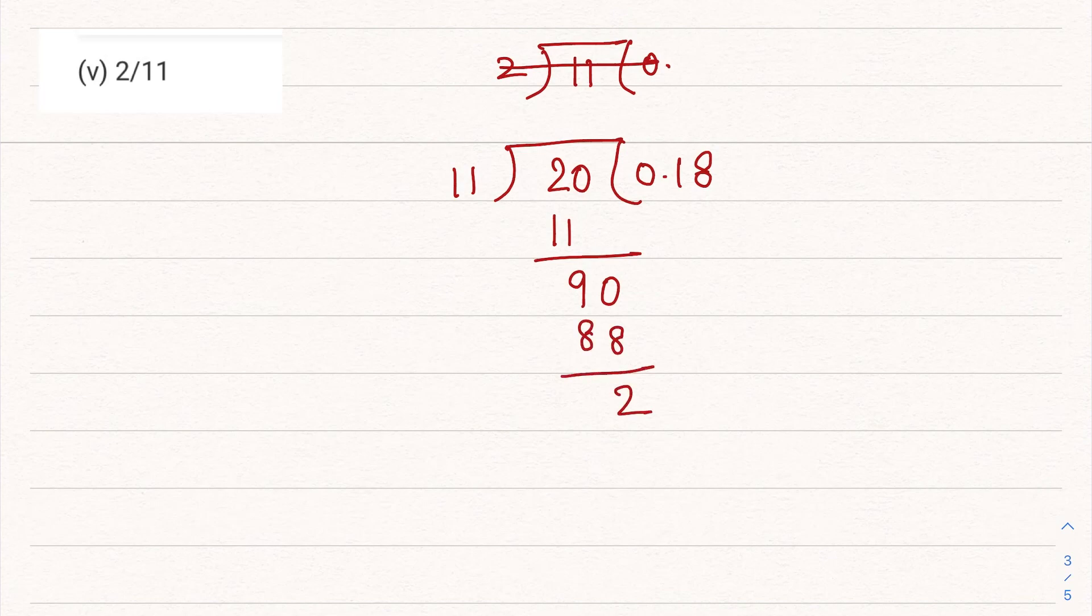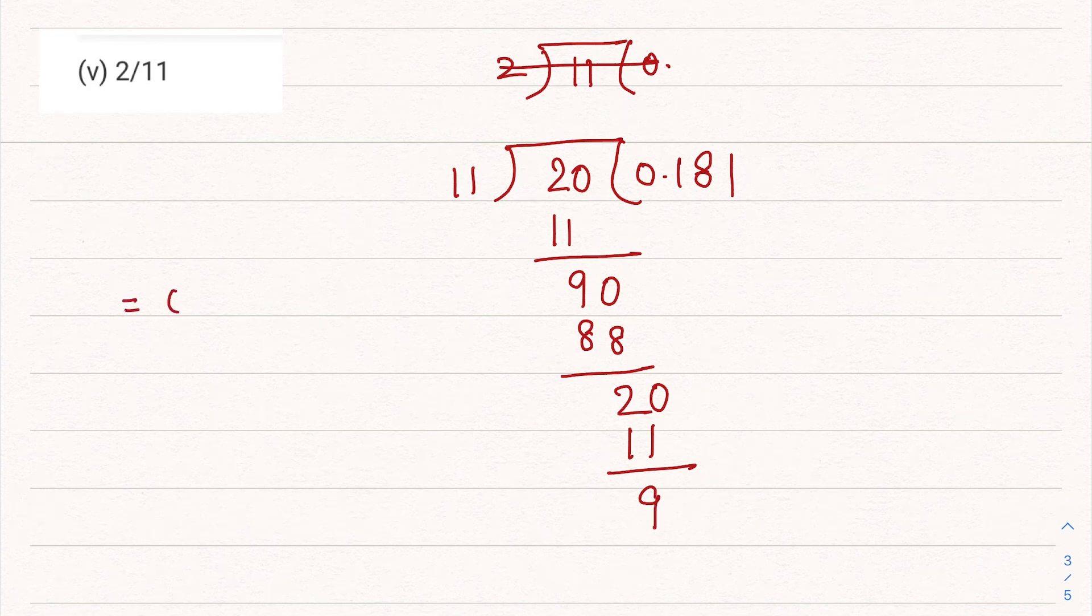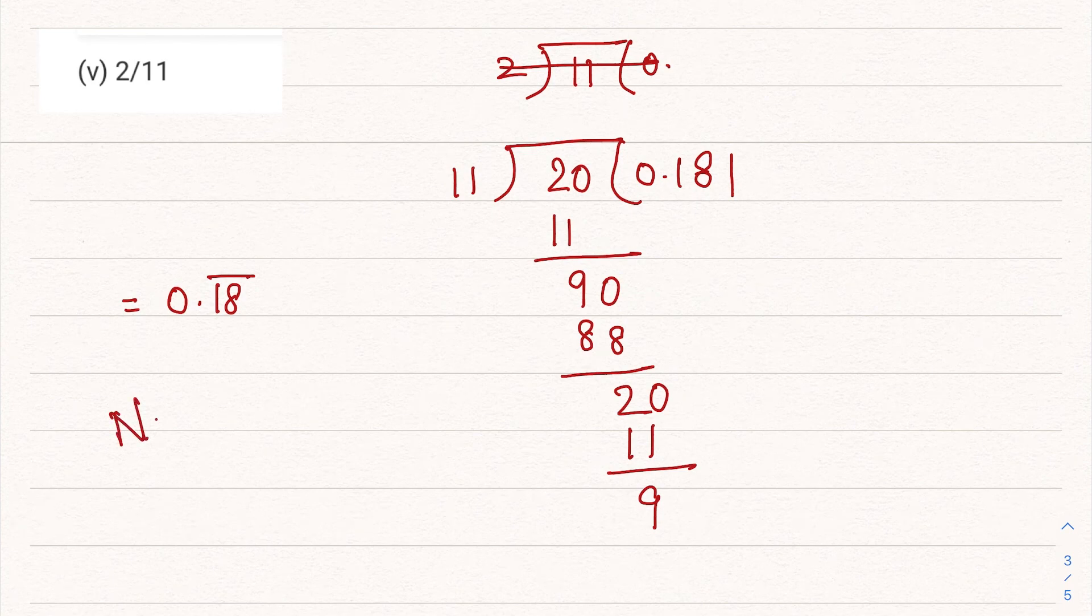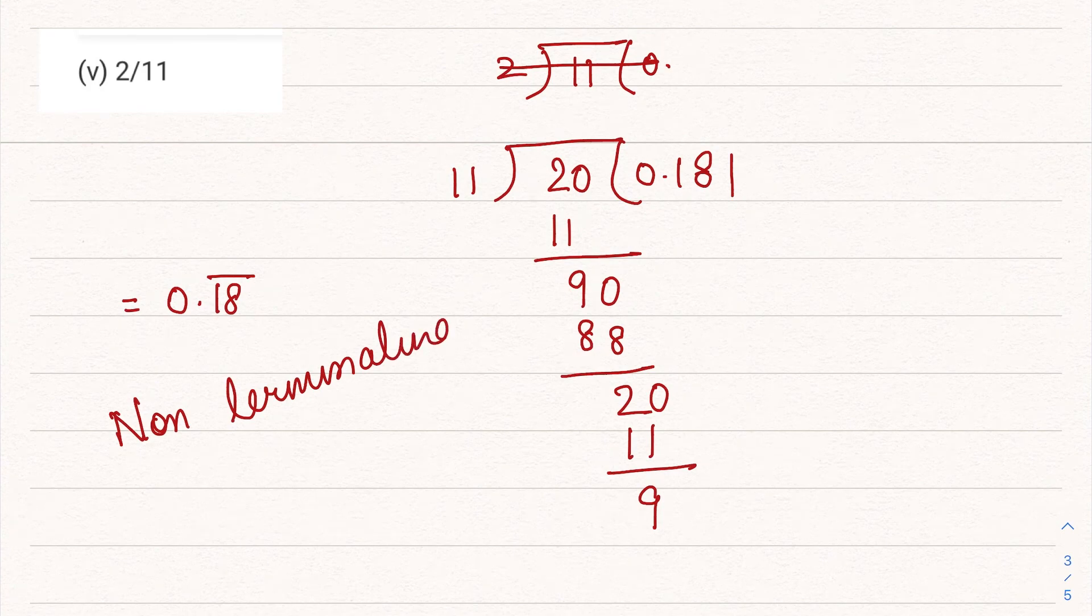Remainder is again 2. That means this will start again. We'll make it 20, then again 1, 11, 9. So our number is coming as 0.18 bar. So this is non-terminating and of course this is repeating.